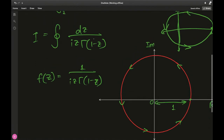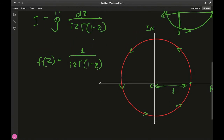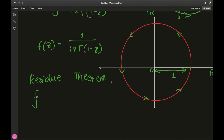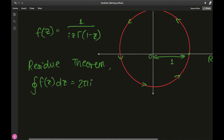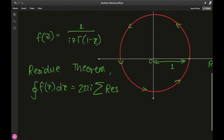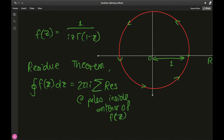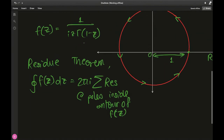Now, is there a better way of tackling this? Yes — we can use the residue theorem. It states that the contour integral of a complex function f(z) dz equals 2πi times the sum of residues at all poles of f(z) placed inside the contour. Poles are values where f(z) blows to infinity, basically where the denominator becomes zero or undefined.